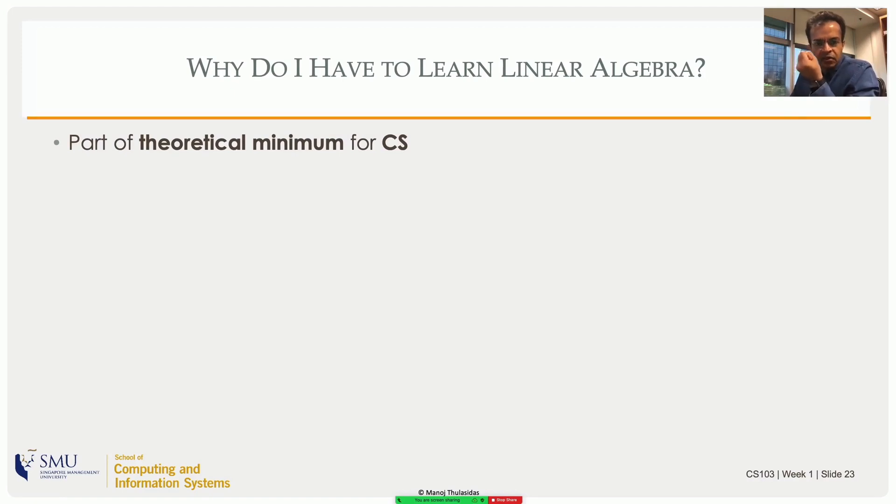Linear algebra really is the theoretical or mathematical minimum that you need to be a good computer scientist. If you ask why do you want to learn words and grammar and sentences and punctuation, what's the reason for learning it? If you want to be a writer, why not just write rather than learn these things? Without knowing words and sentences and punctuation, you cannot be a good writer. Similarly, you cannot be a good computer scientist without having the theoretical minimum.